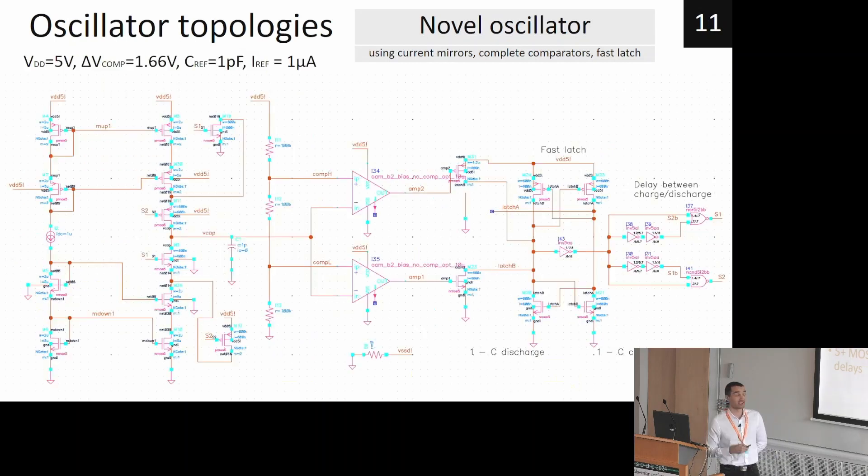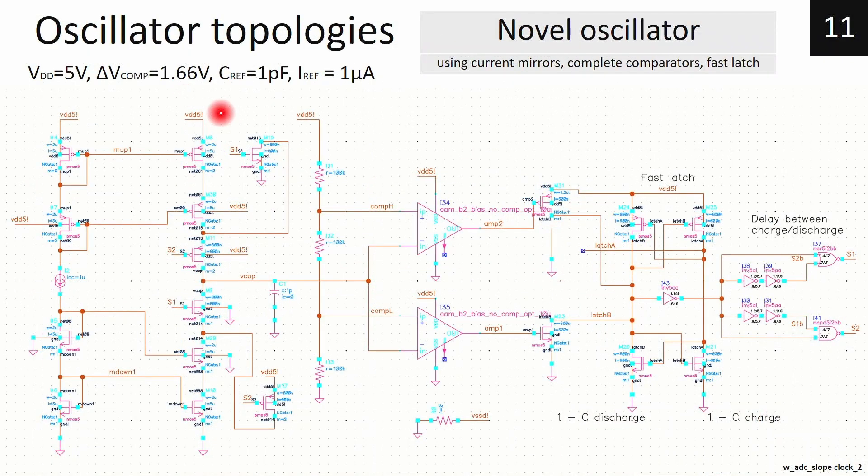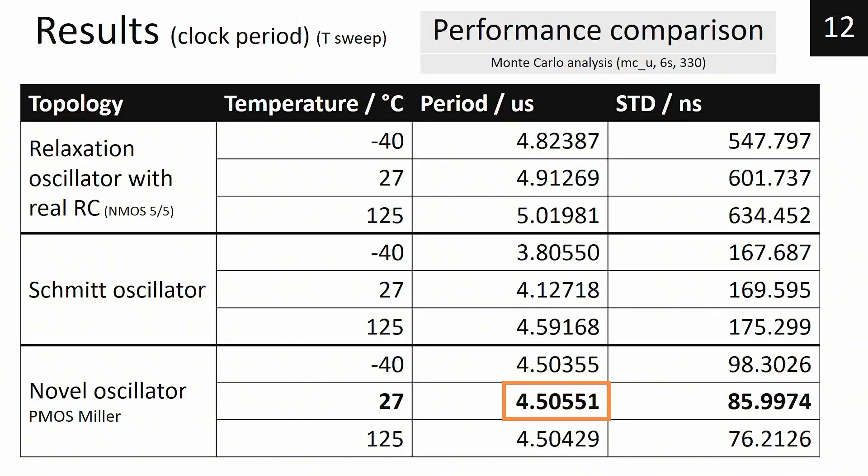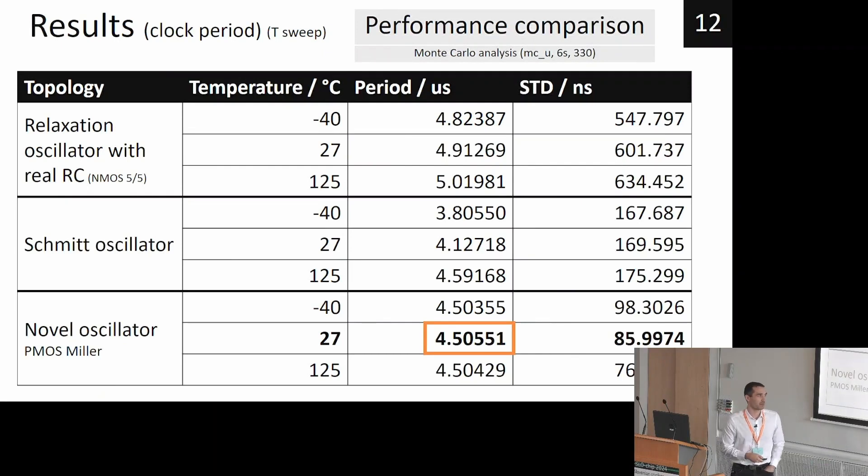The topology schematics of such circuit is shown here. And for five volt supply voltage, 1.66 volt comparator window, one picofarad reference capacitor, and one microamp current, we should ideally get the period frequency of 3.33 microseconds. But simulation shows us other results. It is four and a half microseconds, which is more than 35 percent increase despite having extremely unrealistic